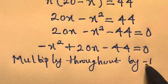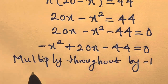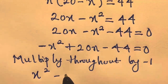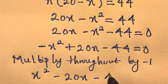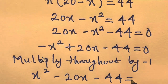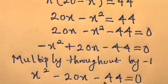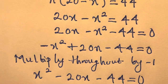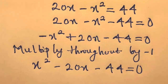If we multiply throughout by minus 1, we will have x squared minus 20x plus 44 equals 0. If you look at this, you see this is a quadratic equation, and to get the value of x, you have to solve it quadratically.